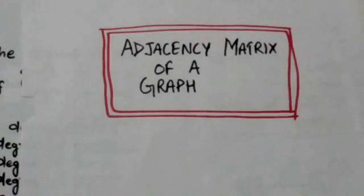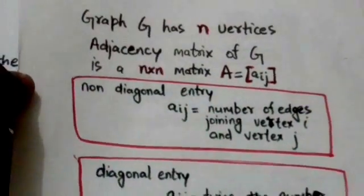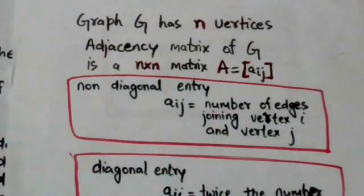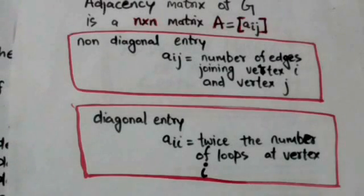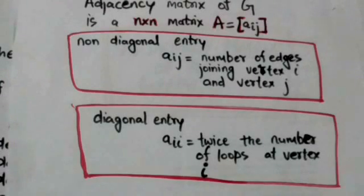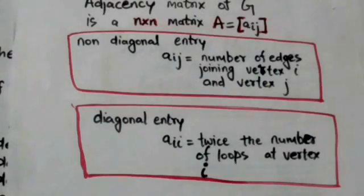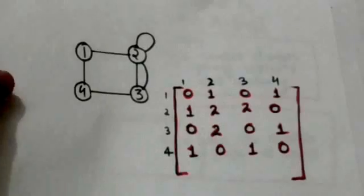Hi friends, welcome back. In this tutorial we will study about the adjacency matrix of a graph. The adjacency matrix of a graph having n vertices is an n×n matrix whose non-diagonal entry at the ith row and jth column is the number of edges joining vertex i and vertex j, and the diagonal entry at the ith row and ith column is twice the number of loops at vertex i. It would be more clear after this example.